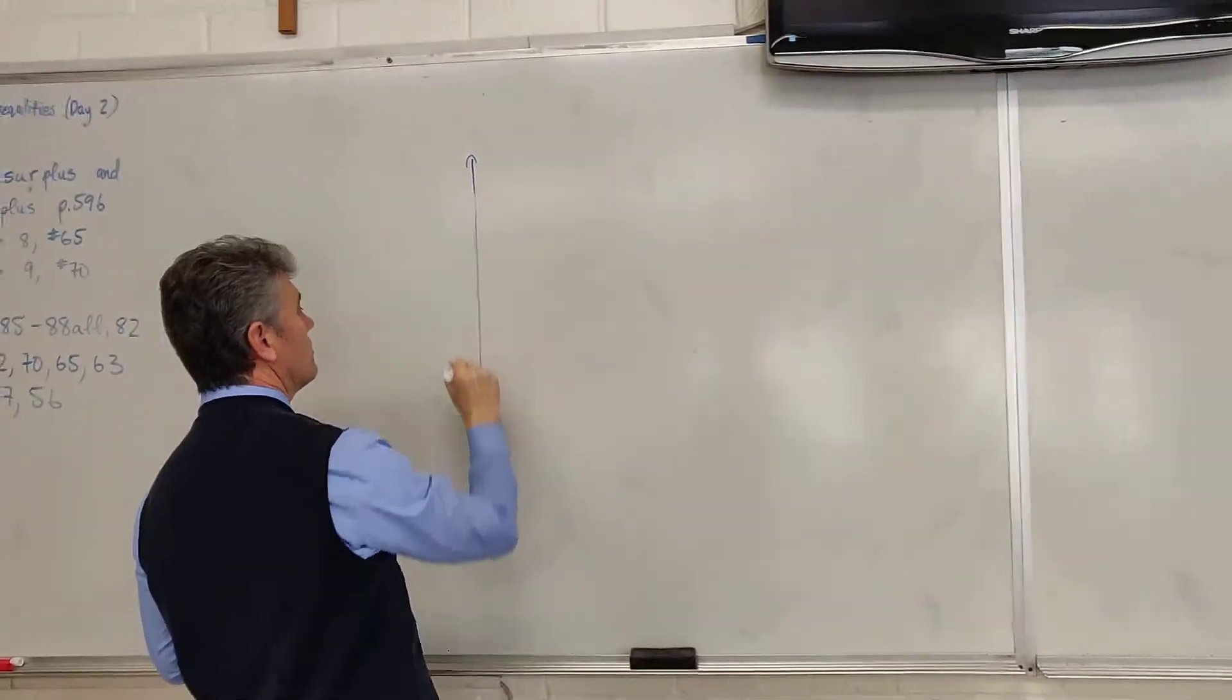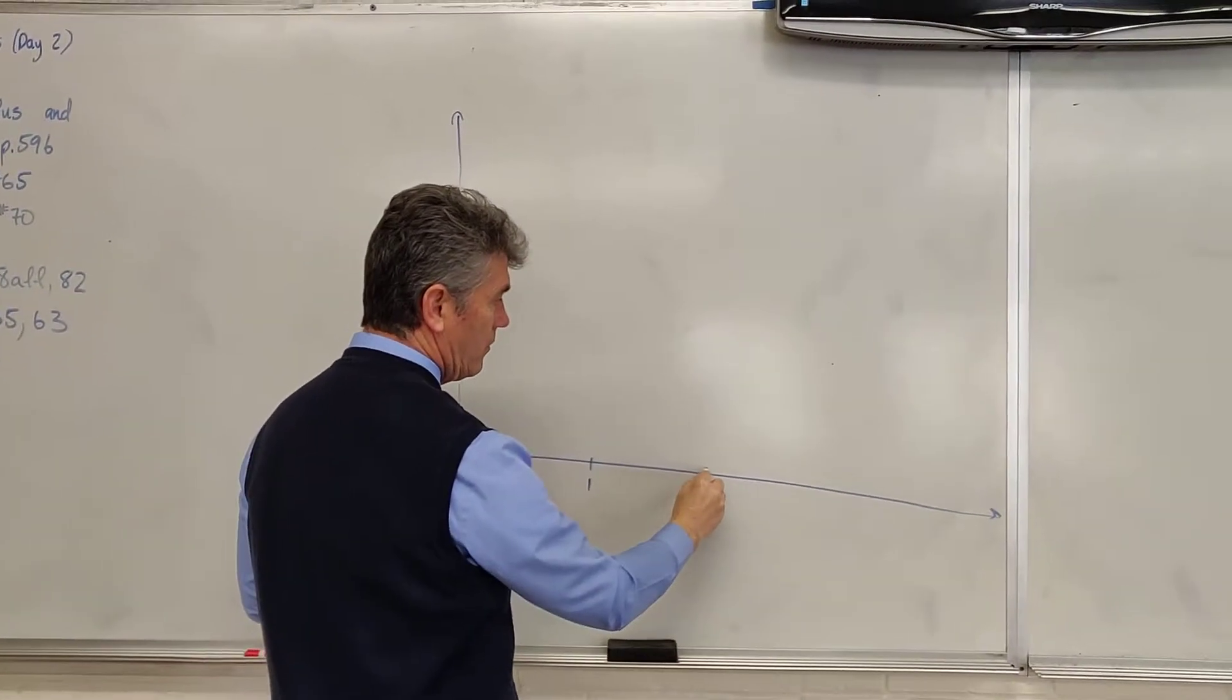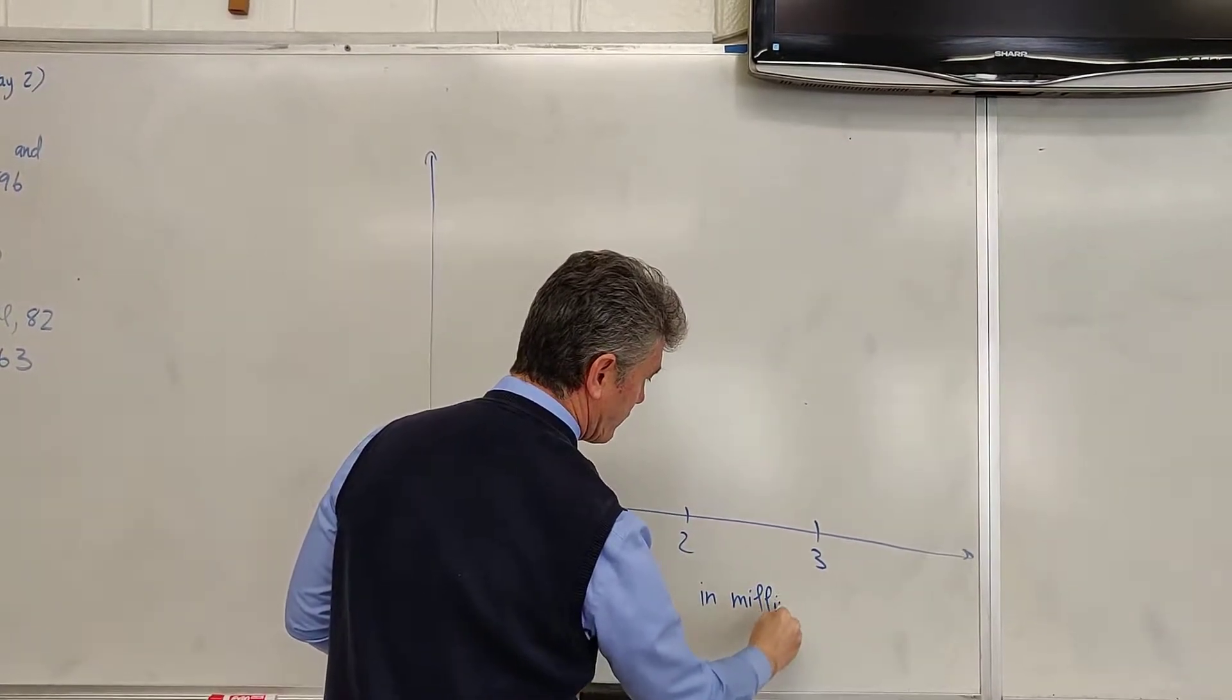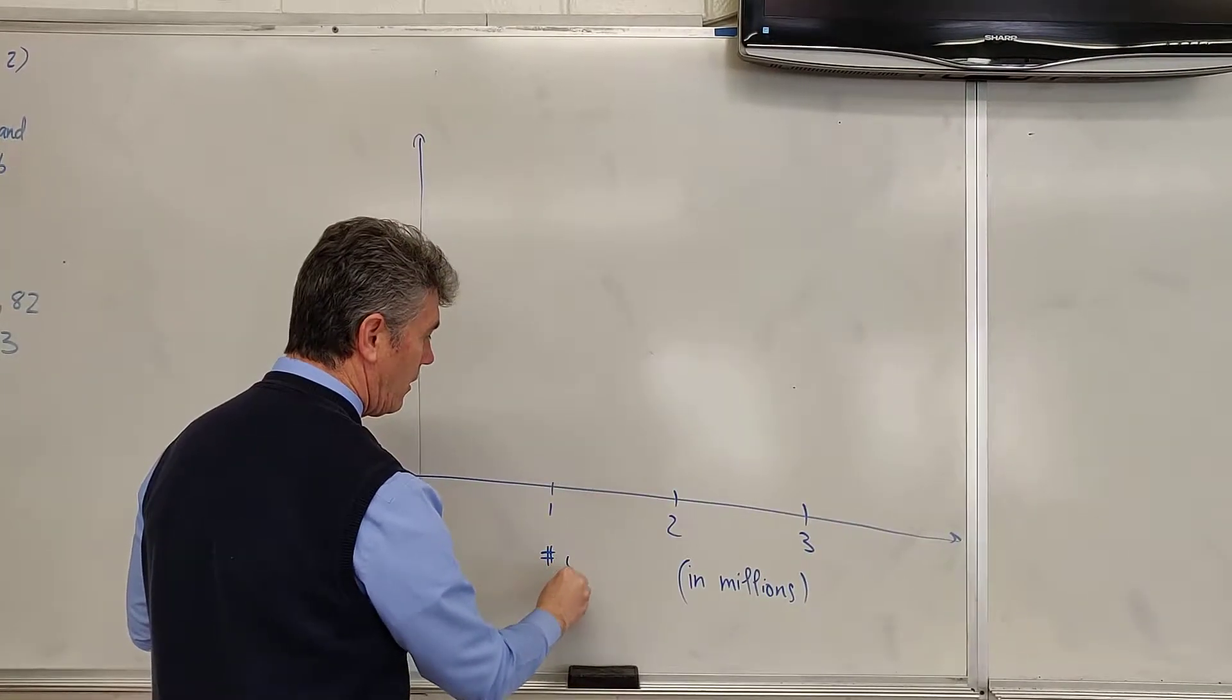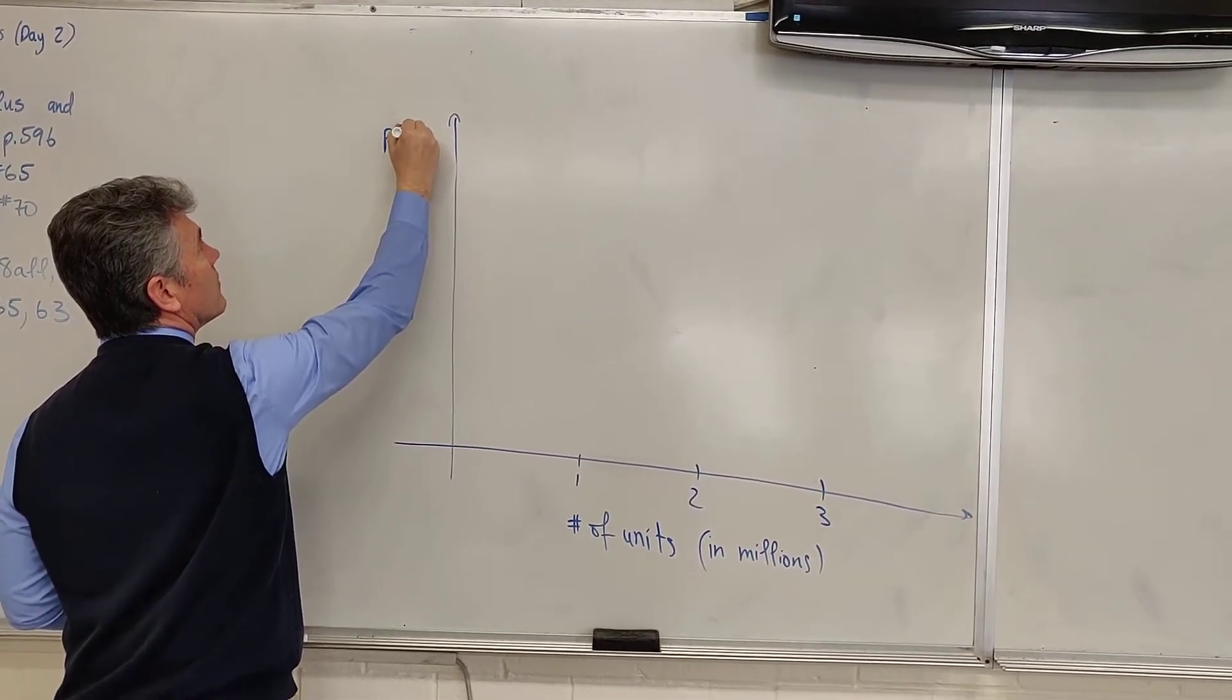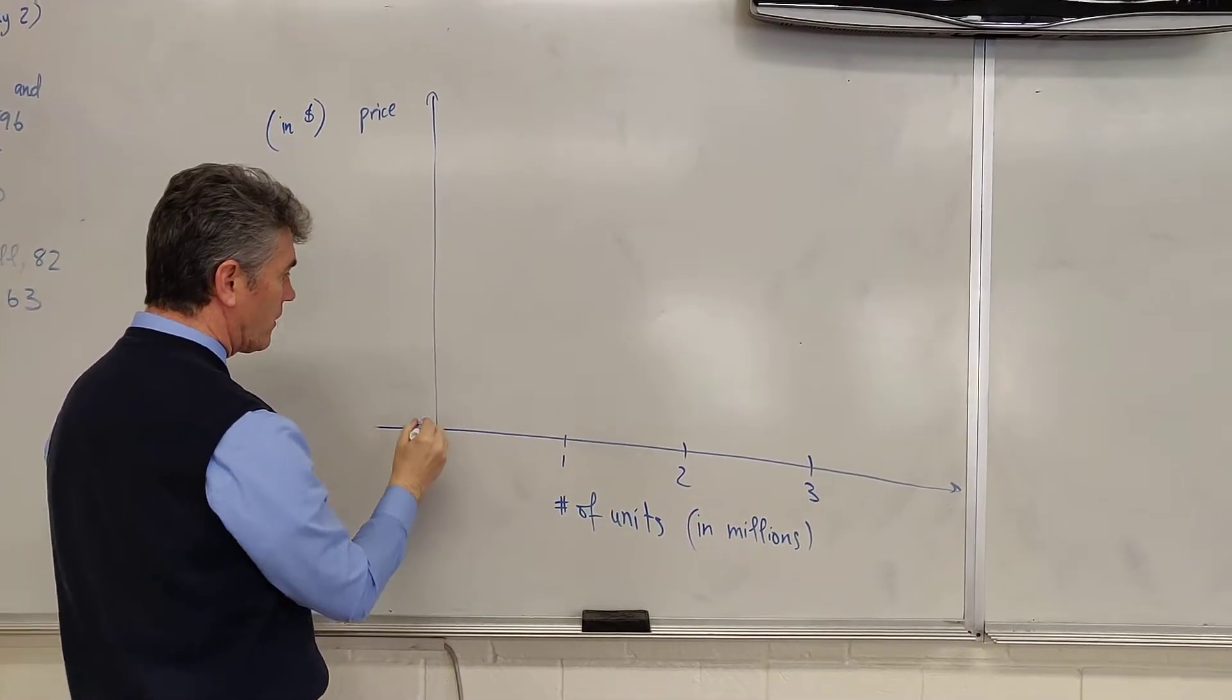We draw the y-axis and the x-axis. On the x-axis we have the number of units. One, two, three, in millions. The y-axis represents price in dollars.